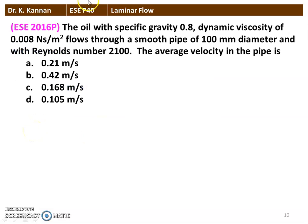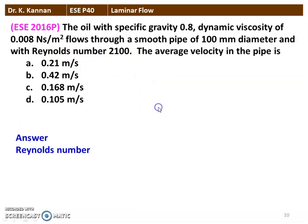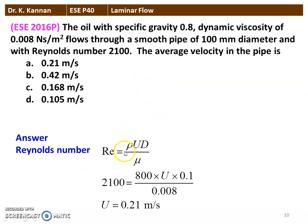The next question from the 2016 question paper: oil with specific gravity 0.8, dynamic viscosity 0.008 N·s/m² flows through a smooth pipe of 100 mm diameter with Reynolds number 2100. Find the average velocity. Using Re = ρUD/μ: 2100 = 800 × U × 0.1 / 0.008, calculating gives U = 0.21 meters per second. Option A is the correct answer.